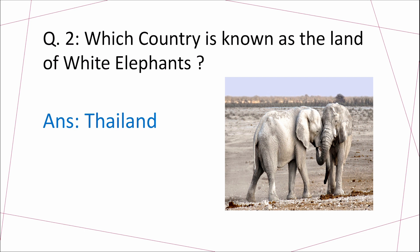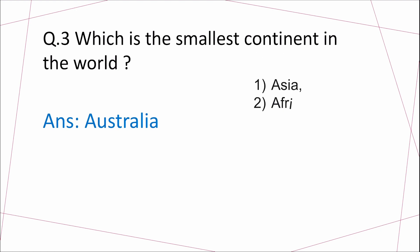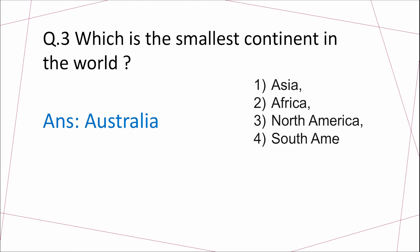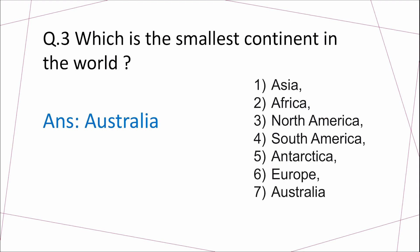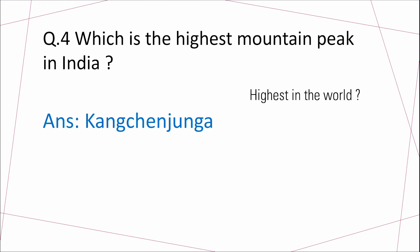Answer: Thailand. Question 3: Which is the smallest continent in the world? Answer: Australia. This is the order of continents from the largest to the smallest: Asia is the largest continent, then Africa, North America, South America, Antarctica, Europe. Australia is the smallest continent.